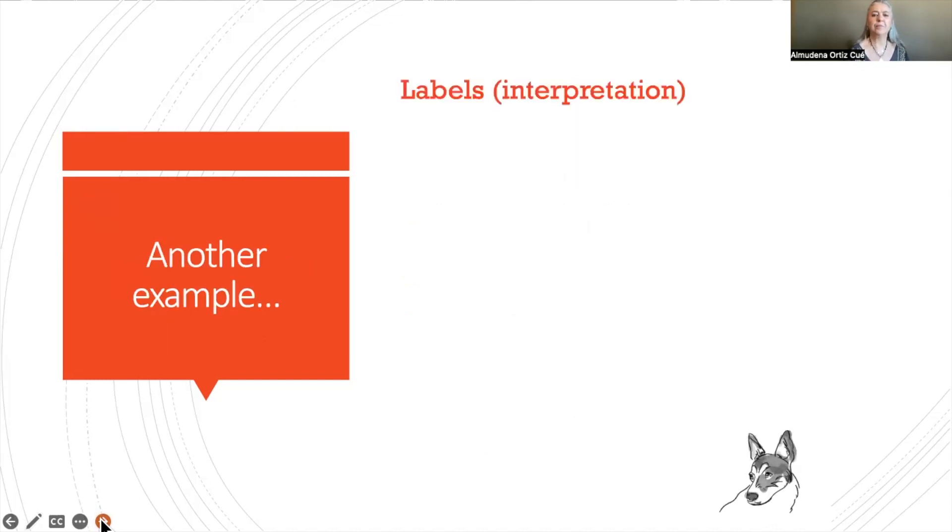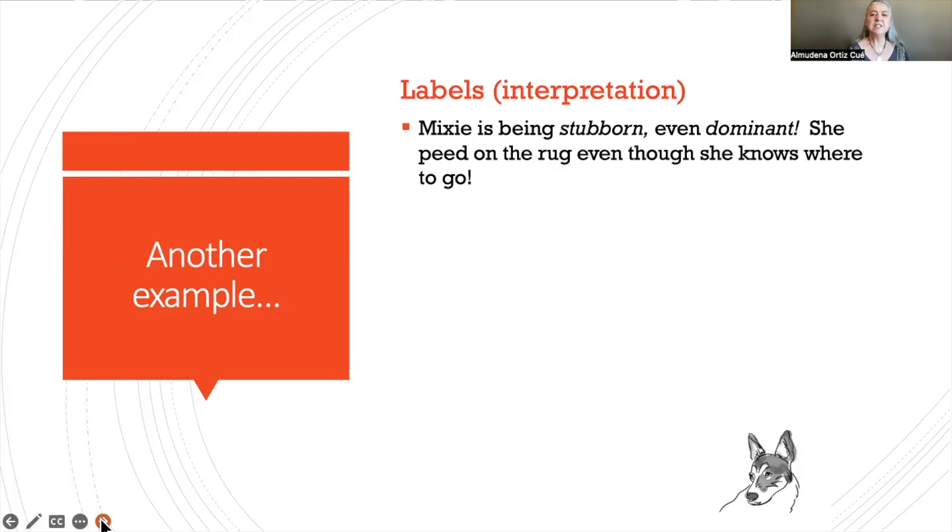Another example. Mixie is being stubborn and even dominant. And I have a lot to say about dominance theory in a future presentation, so I hope you're going to tune in for that. She peed on the rug even though she knows where to go. So here again, the owner is interpreting what she thinks Mixie is thinking and the reasons behind Mixie's behavior. She's being stubborn, she's being dominant.